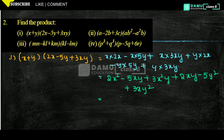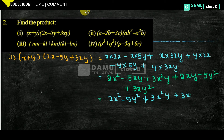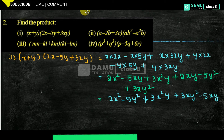So what we have to write here: let's write all the x squared terms and y squared terms and remaining things. So 2x squared, then minus 5y squared, then 3x²y, plus 3xy squared, then remaining: minus 5xy, then plus 2xy.